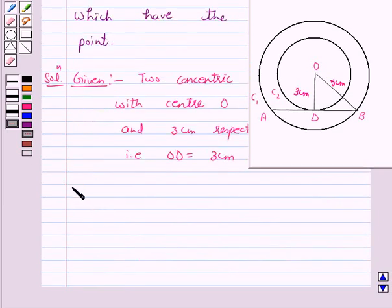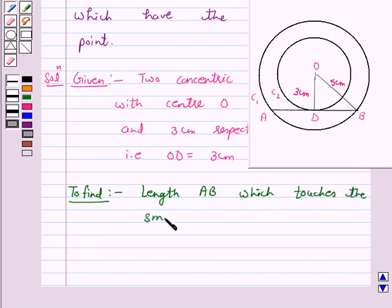Now we want to find the length of the chord of the larger circle, that is C1, which touches the smaller circle, that is C2, at point D. That is, we want to find length of AB which touches the smaller circle at D.